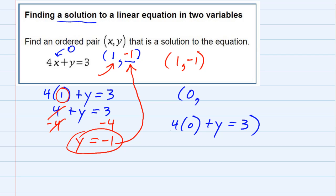And 4 times 0 cancels, and I just get y = 3. So my point when x is 0 gave me a y of 3.